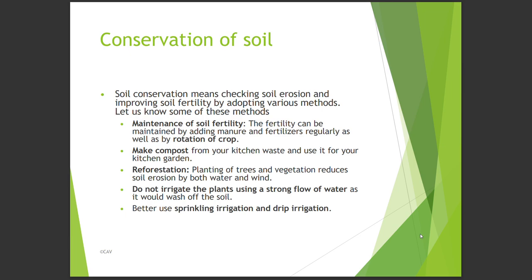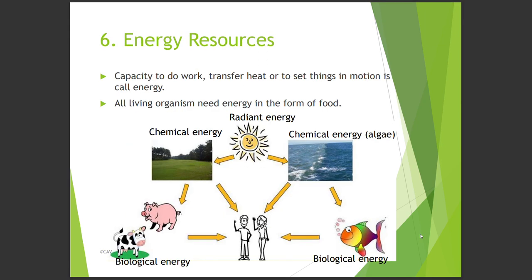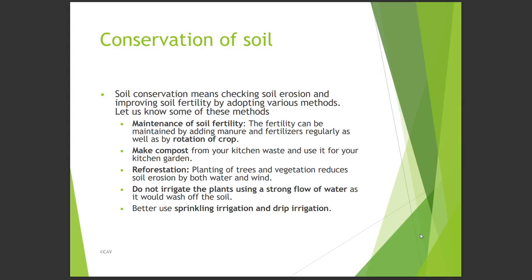Soil conservation means checking soil erosion and improving soil fertility by adopting various methods. Fertility can be maintained by adding manure and fertilizers regularly, as well as by crop rotation. Making compost from kitchen waste and using it in your kitchen garden also helps. Planting trees and vegetation — afforestation or reforestation — reduces soil erosion by both water and wind. Do not irrigate plants using a strong flow of water as it will wash off the soil; better use sprinkler irrigation and drip irrigation.